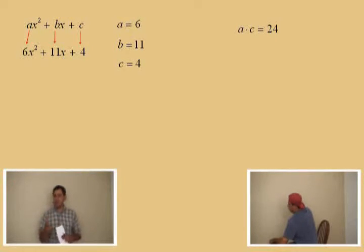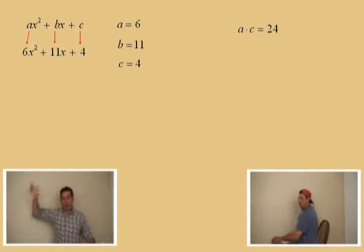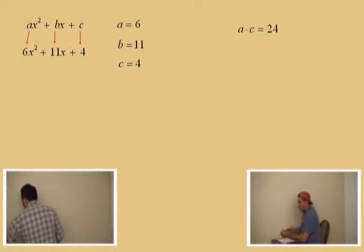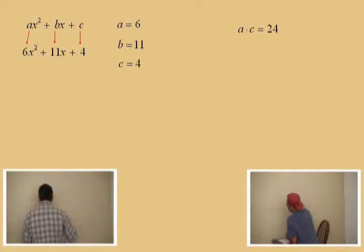And then, as you understand how this works, then you can go to the guess and check method, the backflip, cartwheel method, somersault, all those other things that people came up with. But let's learn things very basically here. Okay. So, a times c is 24.